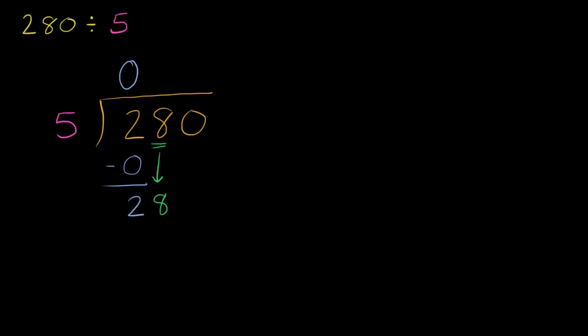And so we can ask ourselves, how many times does five go into 28 without going over it? So we could think, well, let's see. Five times five is 25. Five times six is 30. So five times six would go over 28, so we would want to go back to five times five. So five goes into 28 five times. Five times five is 25, and you subtract. 28 minus 25 is three.